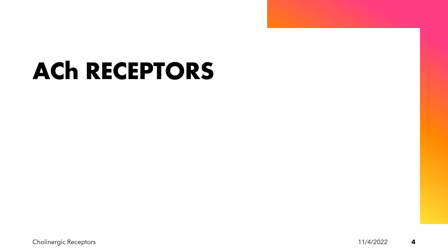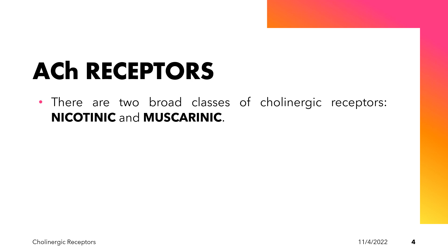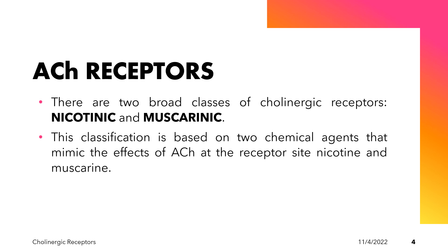Cholinergic receptors are also known as acetylcholine receptors, and we have two broad classes: the nicotinic and the muscarinic receptors. Their classification is based on two chemical agents that mimic the effects of acetylcholine — nicotine and muscarin. Nicotine is derived from the tobacco plant, while muscarin is derived from a species of mushroom.